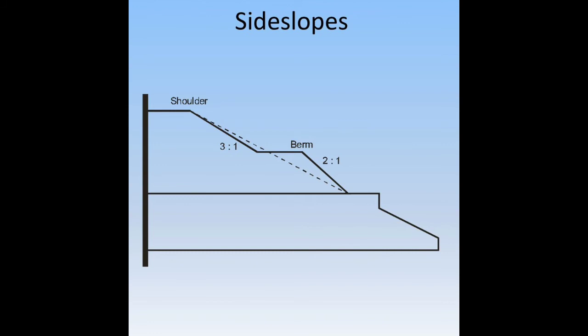The cross-section of a road shows side slopes: the shoulder and beam slope is 3 to 1, and the beam-to-drainage slope is 2 to 1, allowing water to drain easily.